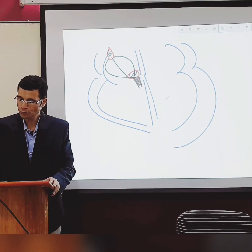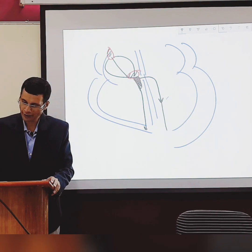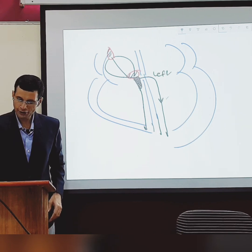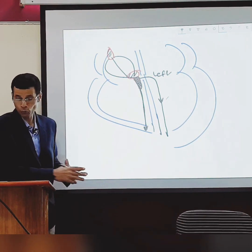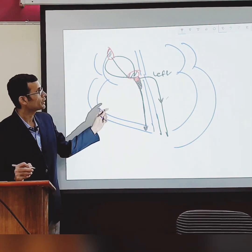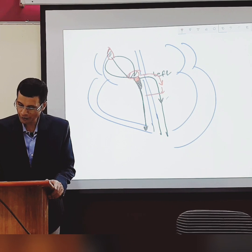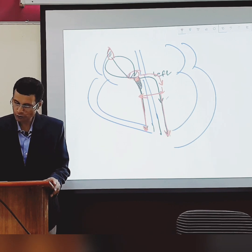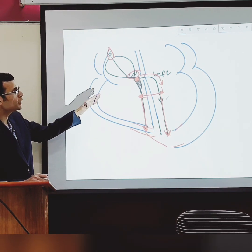The bundle of His gives off the left branch, and then the bundle itself continues downward as the right branch. So when depolarization crosses the AV node and enters the bundle of His, it first enters the left branch, then through the interventricular septum it goes to the right, and then both branches spread toward the apex.